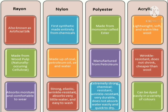Nylon was the first synthetic fiber made entirely from chemicals. Nylon is made up of coal, petroleum, oil, air, and water. It is very strong, elastic, and wrinkle resistant. It absorbs very little water and is easy to wash.